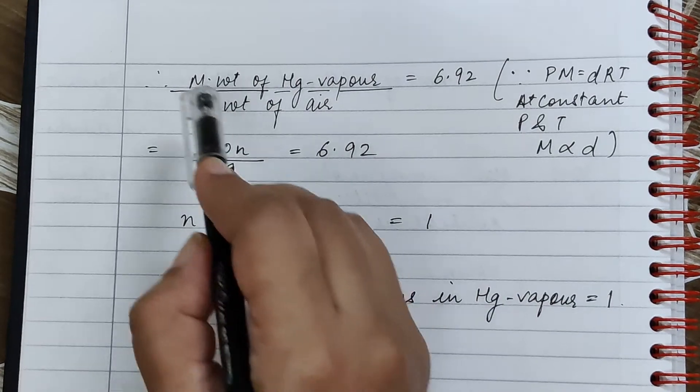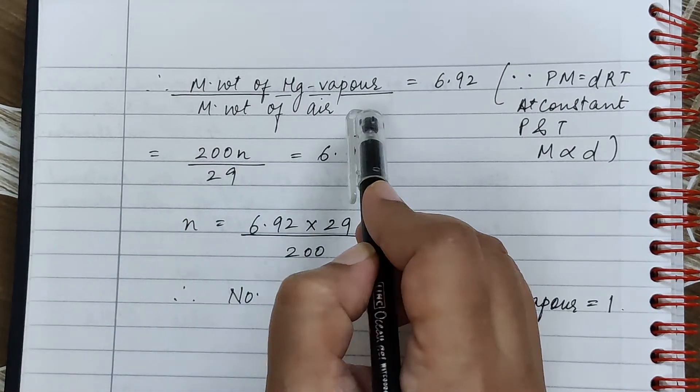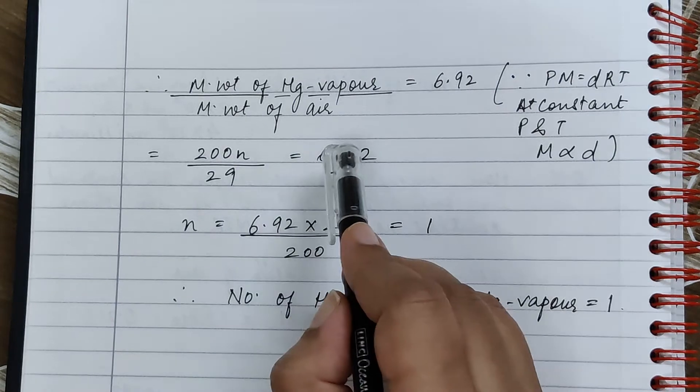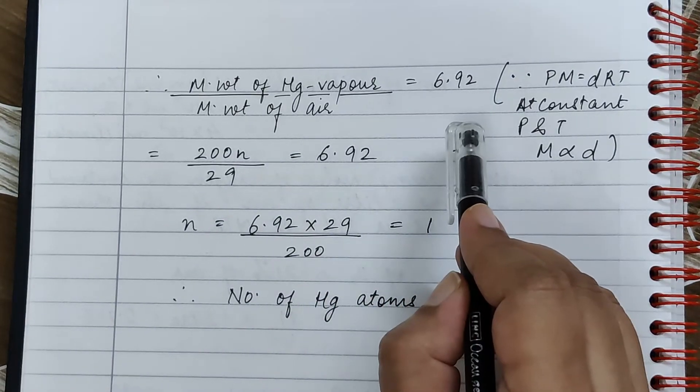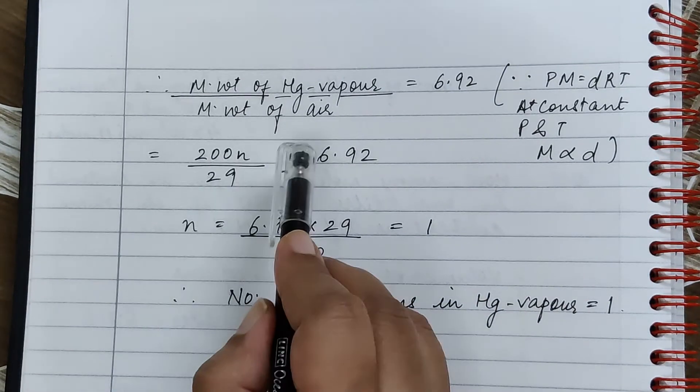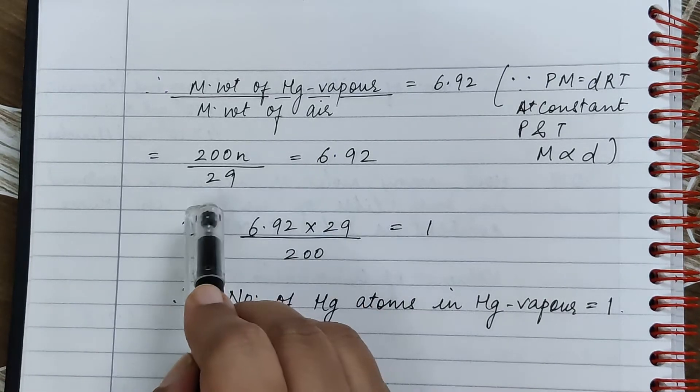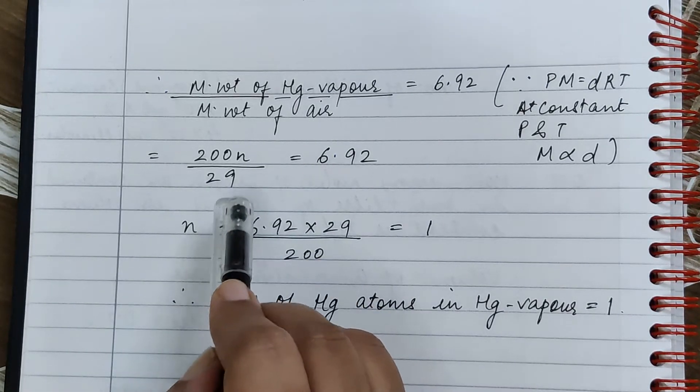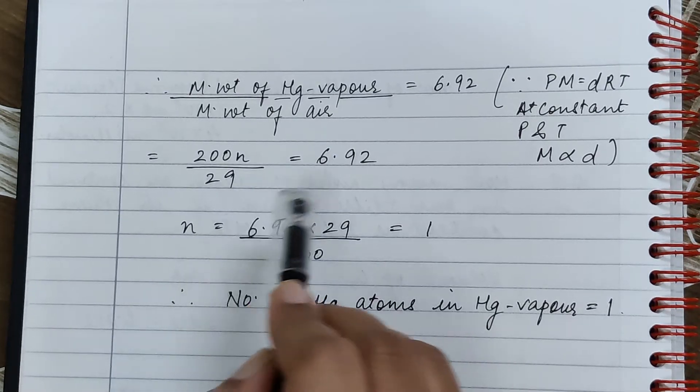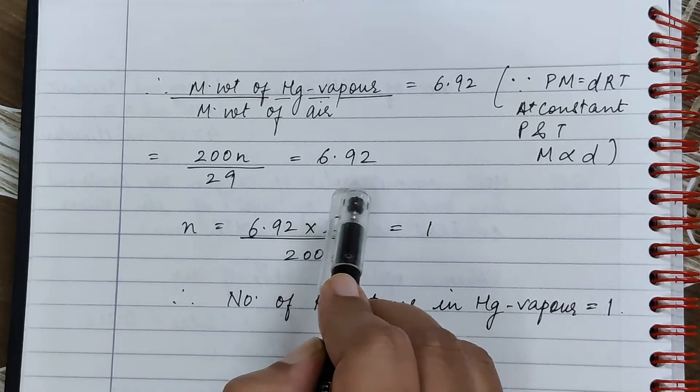So we can write molecular weight of mercury vapor divided by molecular weight of air is equal to 6.92. Now we know that molecular weight of mercury vapor is 200N and molecular weight of air is given as 29. So 200N divided by 29 is equal to 6.92.